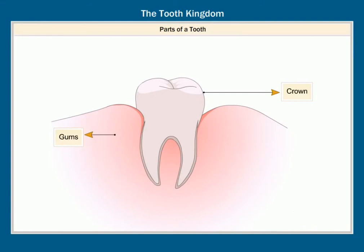The crown is covered with a hard white substance called enamel. It is a hard protective layer of the tooth.